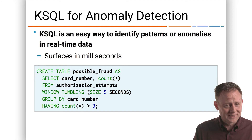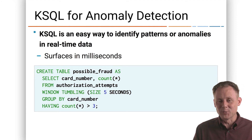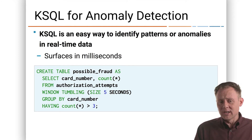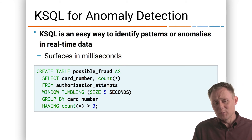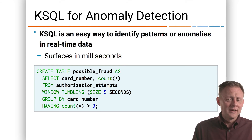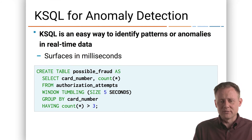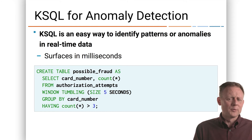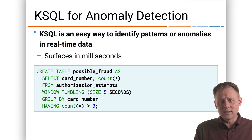Now I haven't mentioned the window yet, and this is key. That's the middle line where it says window tumbling size five seconds. In the whole history of a credit card, hopefully there will be more than three authorization attempts — that's not shady at all. It's only shady if they happen too quickly. If there are three attempts within five seconds, that'd be hard for a person to do: swipe or insert the card or submit the form three times within five seconds. That's a little weird. So if we see that happening within that window, that's going to be flagged as possible fraud.